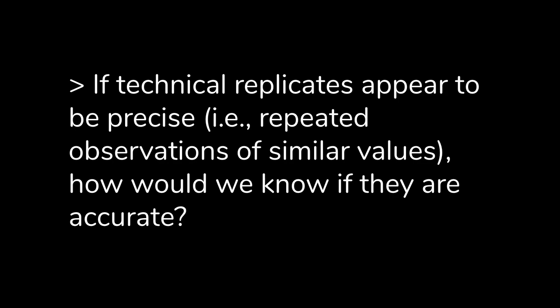If technical replicates appear precise, how would you figure out if they're also accurate? One approach is to use a different experimental protocol or method. Another is to look at biological replicates — if you see similar expression values across different biological replicates, that's a good sign. Another common approach is independent validation using a different experimental mechanism, such as qPCR. Biological replicates and independent validation are really good ways to assess whether apparently precise estimates have any grounding in reality.